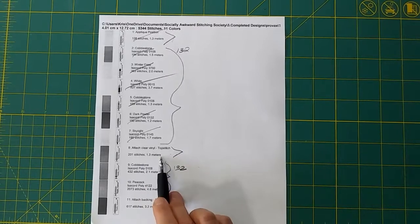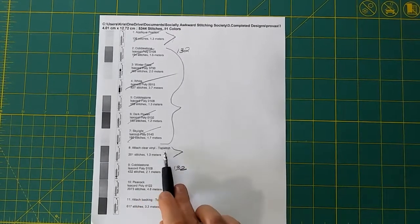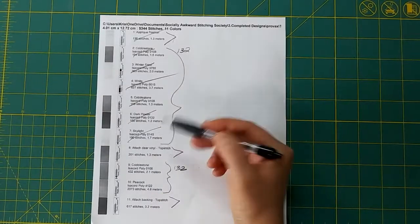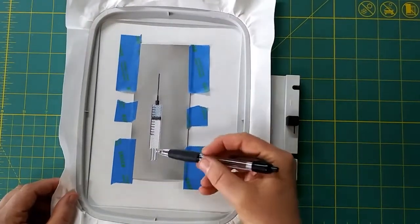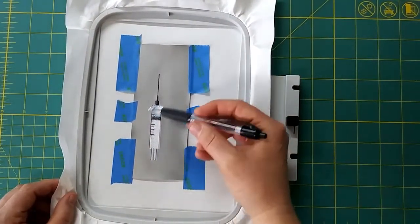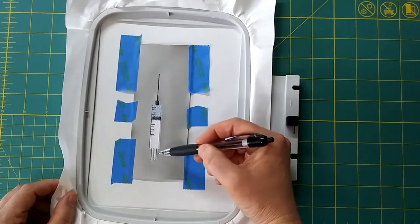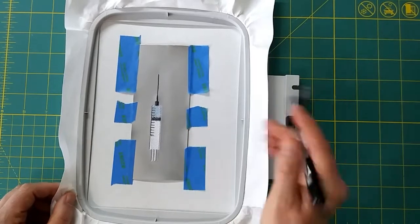So we're about to do step number eight which is to attach the clear vinyl. And notice it doesn't give you a color. That's because this is telling you to do something and it will top stitch. So I'm just going to leave this skylight on. Isacord 145. That's this color right here. It'll blend in well with these colors but you could use white. You could use whatever color you want.